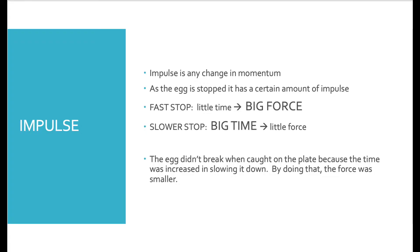This is a demonstration of impulse. Your impulse is any change in momentum, so the egg goes from moving to stopping, and in both situations it does the same thing. If it stops quickly you have a big force, and because it has little time that causes the egg to break. If you extend the time by moving the plate down with the egg as it's slowing down, it makes a bigger time and therefore the force is smaller. So the egg didn't break because we were able to extend the time that it was stopping, and that was able to lower the force to a point that would not break the egg.